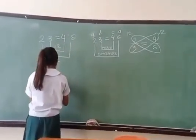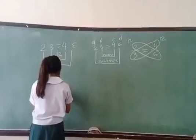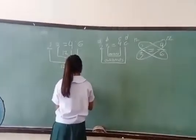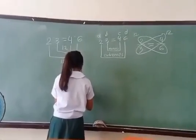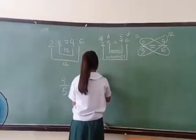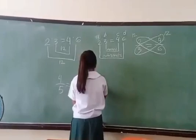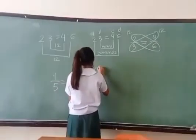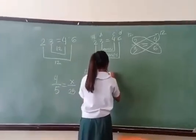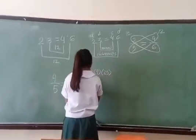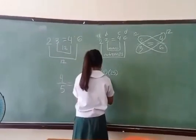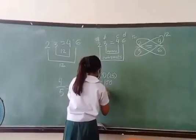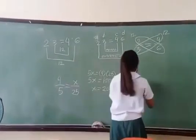Now let's add x to find the answer. 4 over 5 equals x over 25. How do we multiply x by 5? Although you can't multiply x directly, the answer is 5x. 4 times 25 is 100. Divide 100 by 5 — x is waiting for its answer — and the answer is 20.